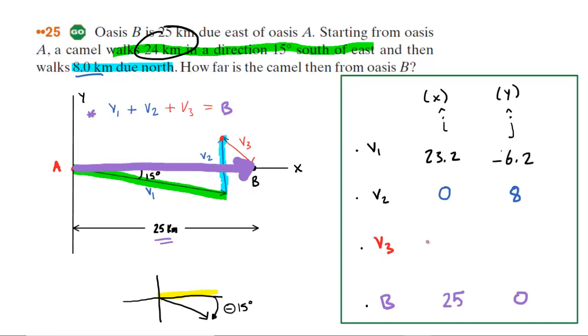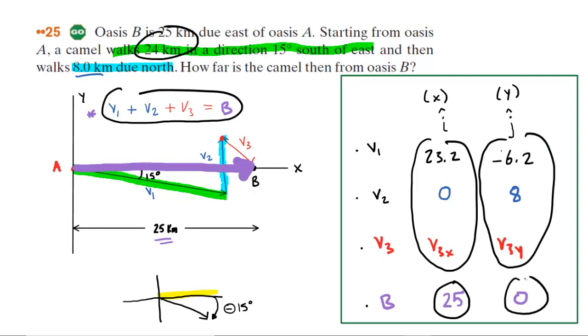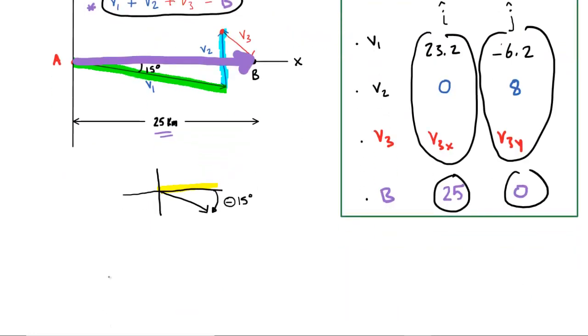Now right now, we don't know the X and Y components of vector 3. So we'll just say V3X and then V3Y. But again, the key insight was that vector 1 plus 2 plus 3 should equal vector B. So what this means is as follows. For the X component, we're going to add these three X components and set them equal to 25. And then for the Y components, we do the same thing. We add these three and set them equal to zero. So maybe we can come down here and develop the equations as follows.